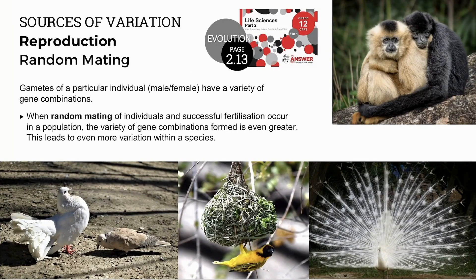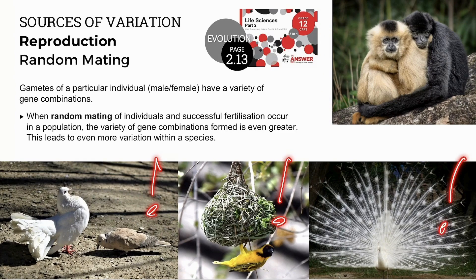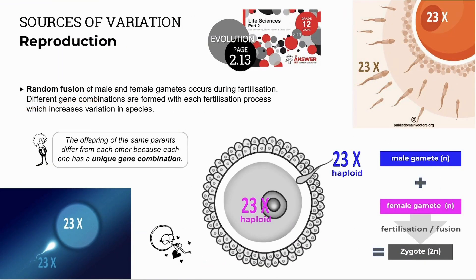Another source of variation occurs in reproduction. Random mating leads to even more gene combinations and more variation. Each offspring formed is different due to random mating pairs, and many organisms make a huge effort to impress a selected mate and increase the chances of passing on superior genes. Random fusion or fertilization of male and female gametes produces different or unique gene combinations in the offspring, which increases variation within a species. Every gamete has a different genetic combination due to crossing over and random arrangement of chromosomes in meiosis, giving 23 unique chromosomes in the sperm and 23 in the ovum, which fuse to form a zygote with 46 chromosomes unique in their genetic combination.